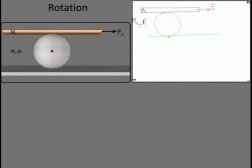Do I need to worry about direction or assume any direction? I am assuming that the friction force acting on the sphere is towards left at the bottom — call it F1 — and the equal and opposite force is exerted by the sphere on the ground, which is also F1. At the top contact point, I assume the friction force acting on the plank is in the left direction as F2, and the friction force acting on the sphere is towards the right.